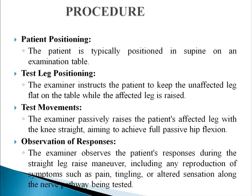The procedures: patient positioning — the patient should be positioned supine on an examination table. For test leg positioning, the examiner instructs the patient to keep the unaffected leg flat on the table while the affected leg is raised. For the test movements, the examiner passively raises the patient's affected leg with the knee straight, aiming to achieve passive full hip flexion.